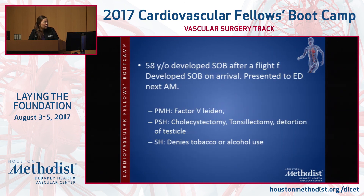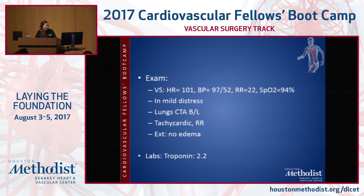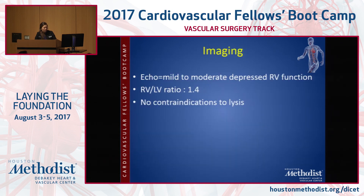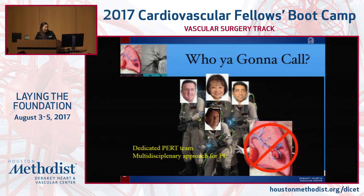A lysis case example: a 58-year-old developed shortness of breath after a flight and presented to the ED the next day. He had a hypercoagulable disorder, no surgical history, no recent trauma or head injury or GI bleed, and was morbidly obese. He was slightly tachycardic, in mild distress, no lower extremity swelling, and had a slightly elevated troponin. CTA PE protocol showed emboli in both pulmonary arteries — not a saddle embolus, but bilateral. We obtained a duplex, an echo, and measured the RV-LV ratio, which was 1.4. Echo showed mild to moderate depressed RV function.